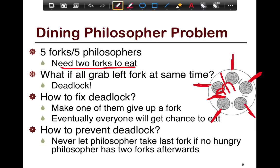So the question is: what happens if all of them grab the left fork at the same time? Each philosopher grabs one fork — the first, second, third, fourth, and fifth — and you land up in deadlock because none of them can eat, as there is no philosopher with two forks in hand.